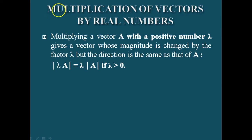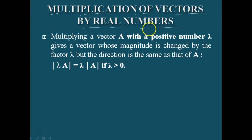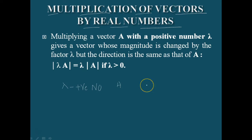In this part we are going to study multiplication of vectors by real numbers. Multiplying a vector A with a positive number delta gives a vector whose magnitude is changed by a factor delta, because delta is multiplied to vector A.